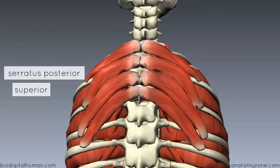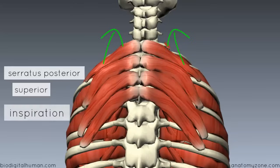Its function is to elevate the ribs. If it contracts, the angle of the muscle fibres indicates that it's going to pull the rib cage upwards, elevating the ribs. So this assists in inspiration.